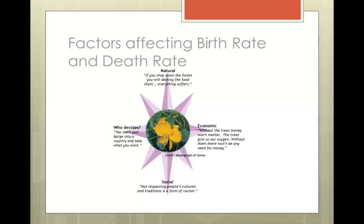Another key thing affecting the birth rate is medical care and the fact that children are surviving for longer, so infant mortality goes down. This is due to inoculations against childhood diseases such as measles and mumps. A social factor which controls birth rate is the education of women or religious beliefs in a country. For instance, in Catholic and Islamic countries they do not allow birth control, and consequently their birth rates tend to be higher. Also, if you've got a high level of education, very often women are choosing to have a career as opposed to having children, and therefore they're having babies later. Political factors affecting birth rates include China's one-child policy as an example.